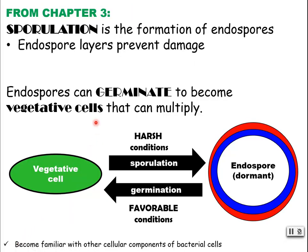Just to remind you: if there are harsh conditions, a cell goes through sporulation and then the endospore is dormant. When the conditions become favorable again, then they germinate.